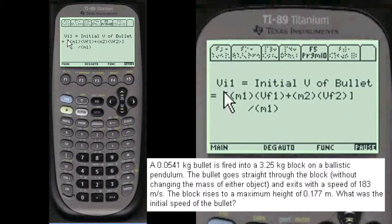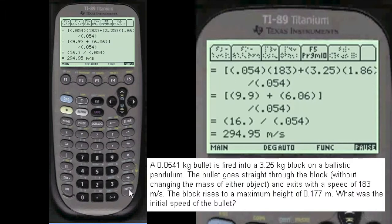And here's the formula for finding the initial velocity of the bullet. Added the variables. And here's the answer, 294.95 meters per second. Pretty neat, huh? Everystepphysics.com.